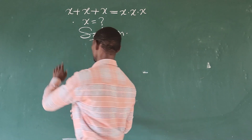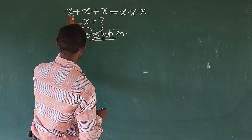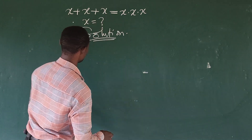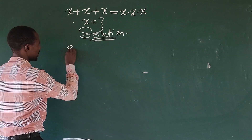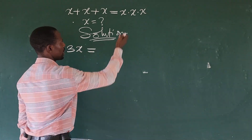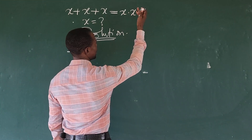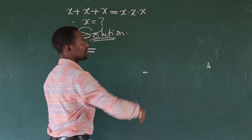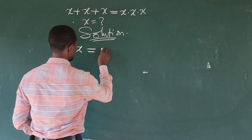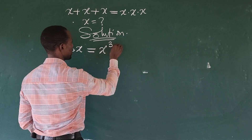So here we're going to rewrite this. x plus x plus x will give us 3x. So we're going to have 3x is equal to x times x times x, which gives us x to the power of 3.